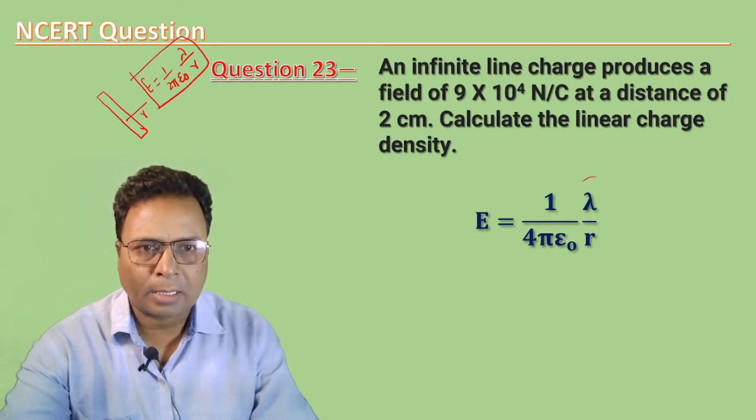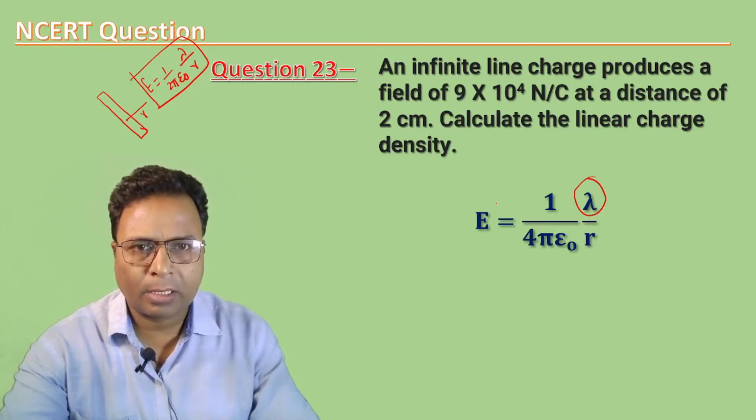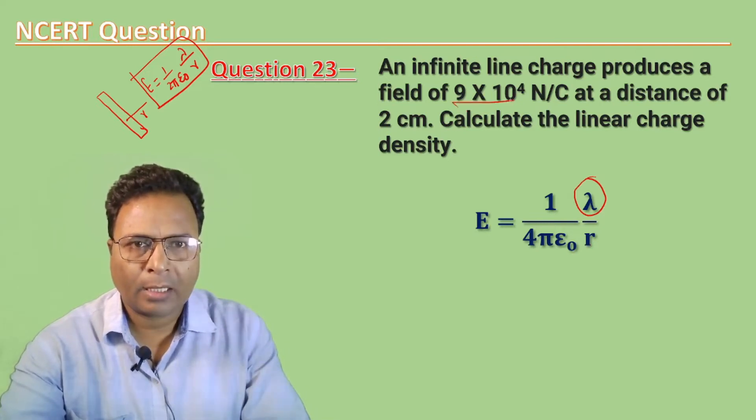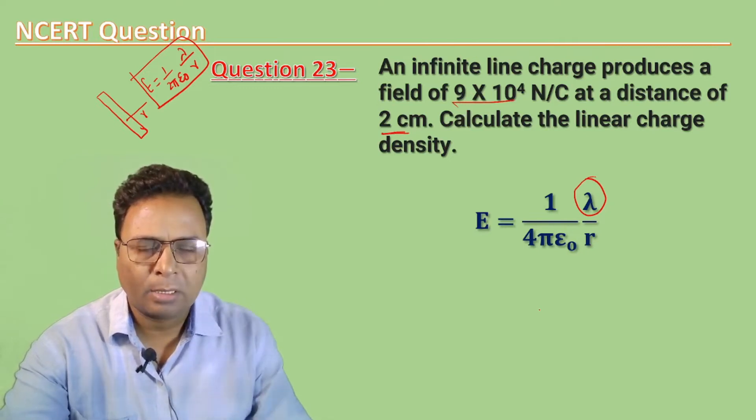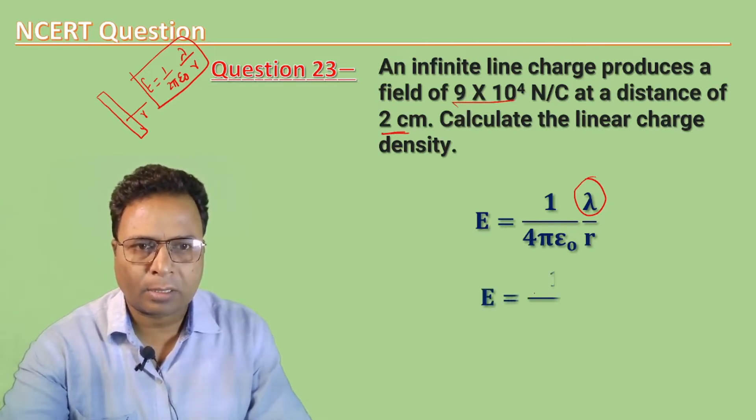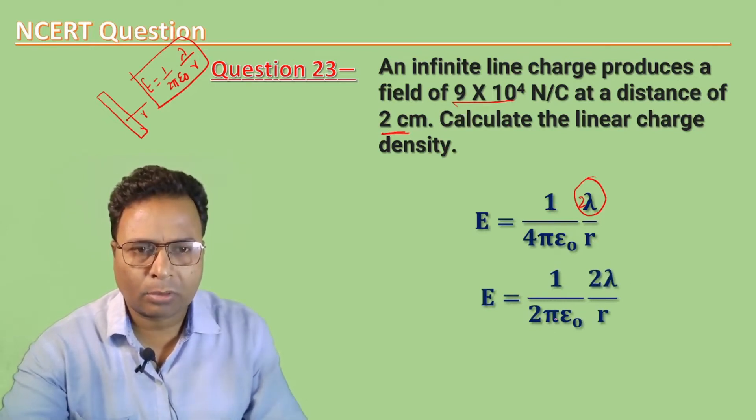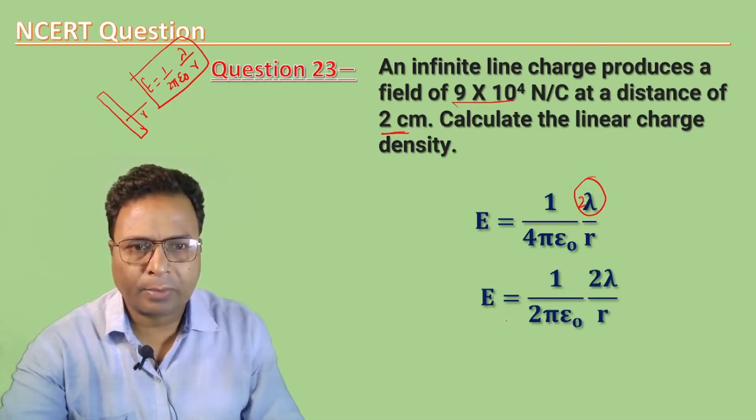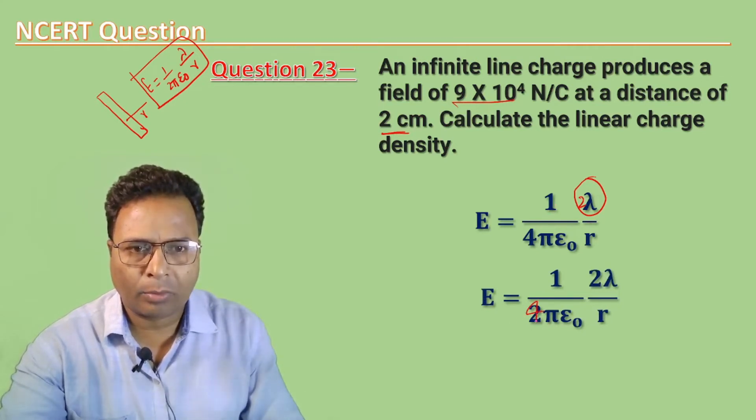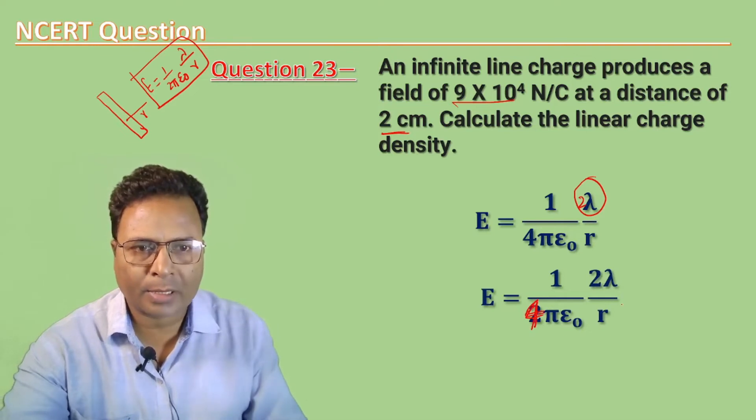Lambda, you need to find. E value is here, 9 × 10⁴, and how much distance r is? You need to find it. The linear charge density is here.